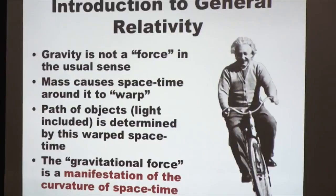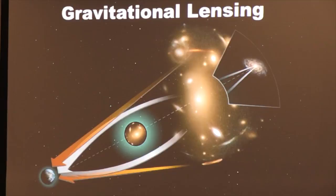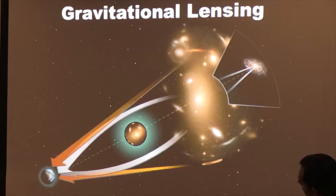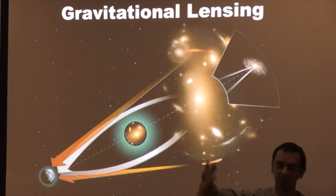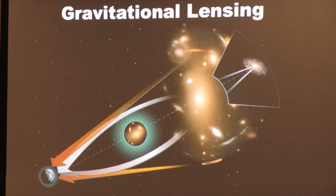This idea that light bends because of mass is now used routinely by astronomers as gravitational lensing. Large clumps of matter — like a cluster of galaxies — act effectively like a lens, focusing light coming toward Earth. Astronomers use this technique to look further out into the universe by using known amounts of matter as a lens to see much further out. It's done pretty routinely now; it's such a standard effect.